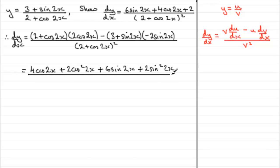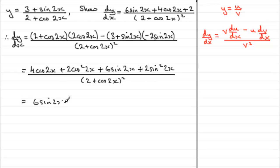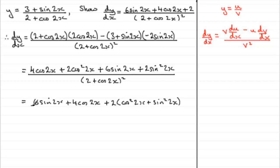All of that is divided by (2 plus cos 2x) all squared. We can see the 4 cos 2x and 6 sine 2x match the target expression, but we still need the 2. Writing in the target order: 6 sine 2x plus 4 cos 2x, then factoring out 2 from the remaining terms gives plus 2(cos² 2x plus sin² 2x), all over (2 plus cos 2x) squared.